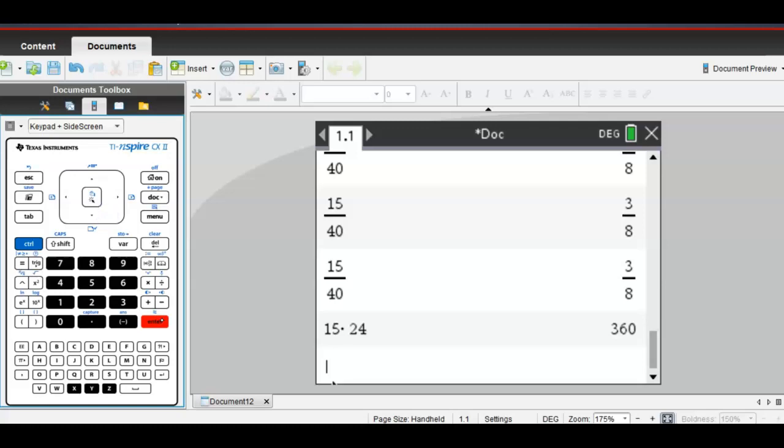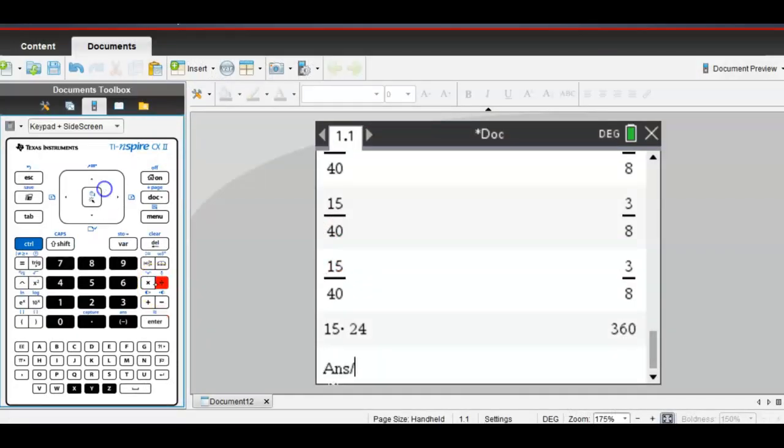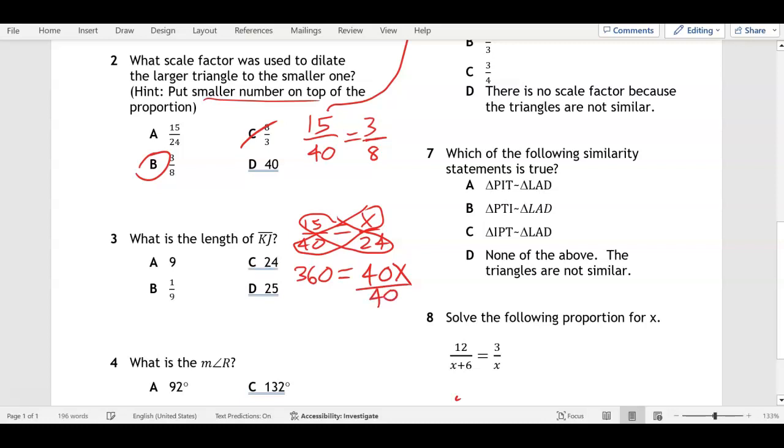Now we have a proportion we can solve using cross multiplying and dividing. 15 times 24, there's 360, so 360 equals 40 times X, which is 40X. Then all we got to do is divide by that 40, so 360 divided by 40 should give you 9.